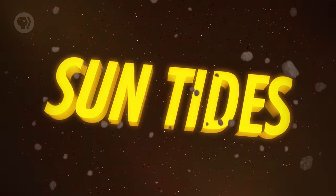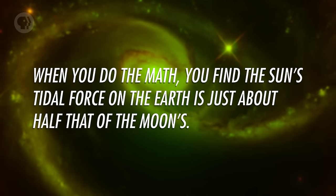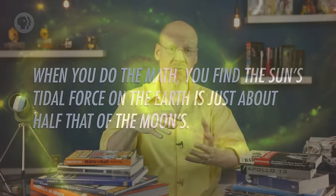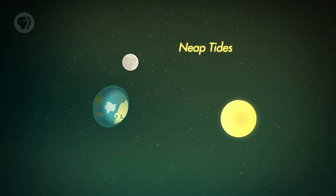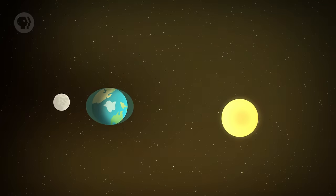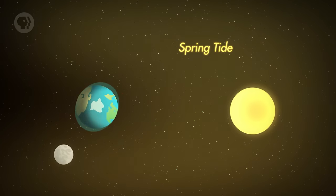What about the Sun? It's even bigger than the Moon. The Sun is far more massive, but much farther away — these two effects largely cancel each other out, and the Sun's tidal force on the Earth is just about half that of the Moon's. At New Moon, the Earth, Moon, and Sun are in a line, so the Moon's tidal force aligns with the Sun's, reinforcing it — giving us an extra high high tide and extra low low tide, called the spring tide. When the Moon is at first quarter, high tide from the Moon overlaps low tide from the Sun, giving us neap tides. The pattern repeats at full Moon with spring tides, and a week later neap tides again.